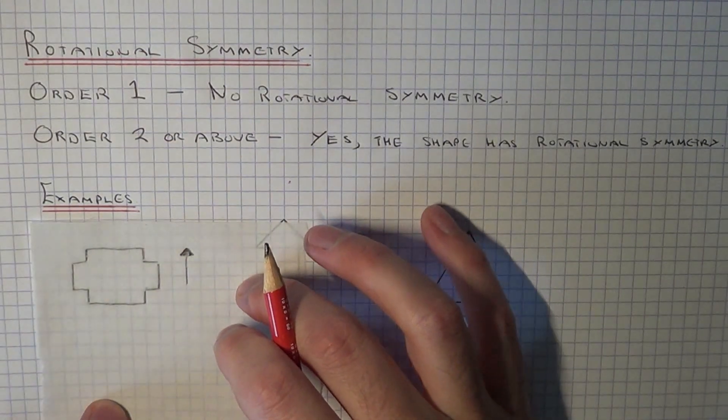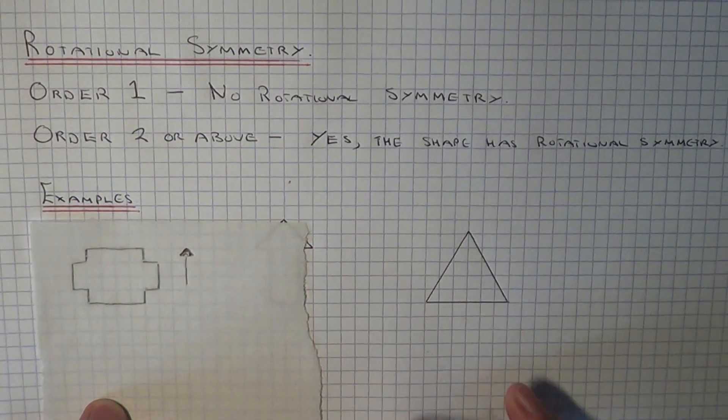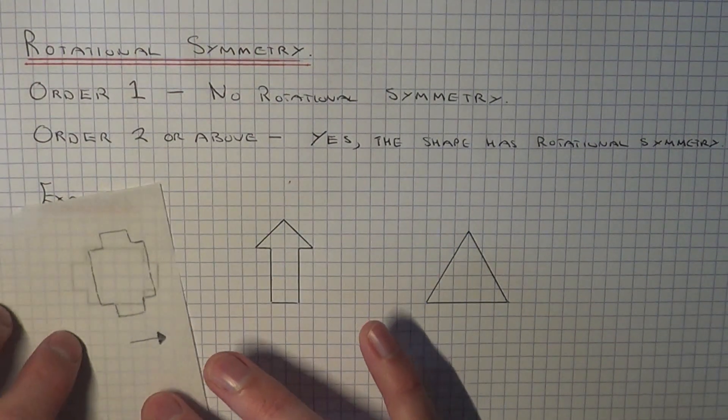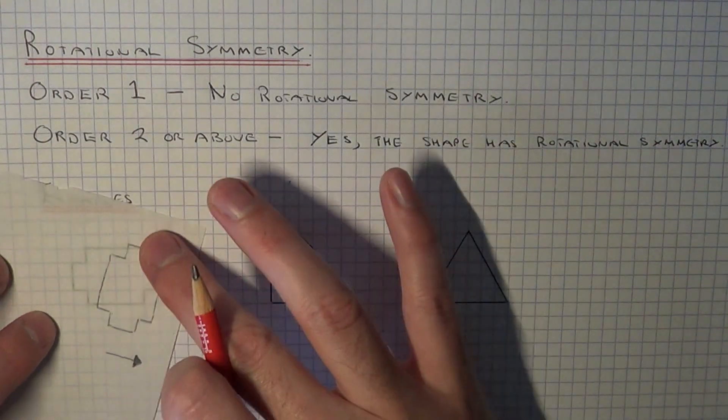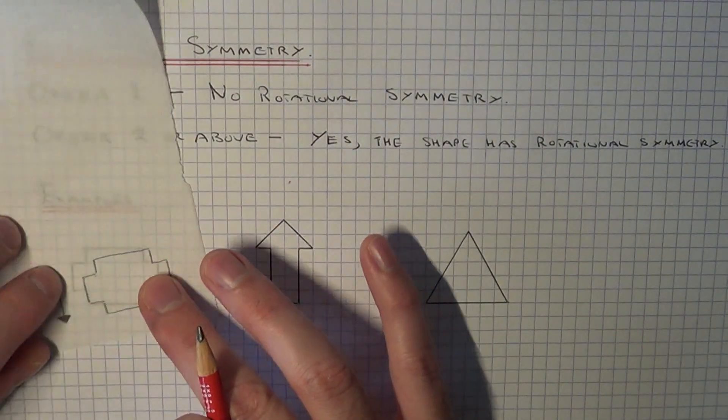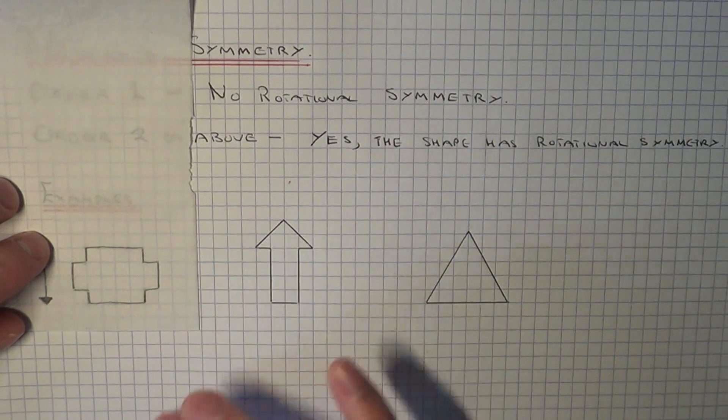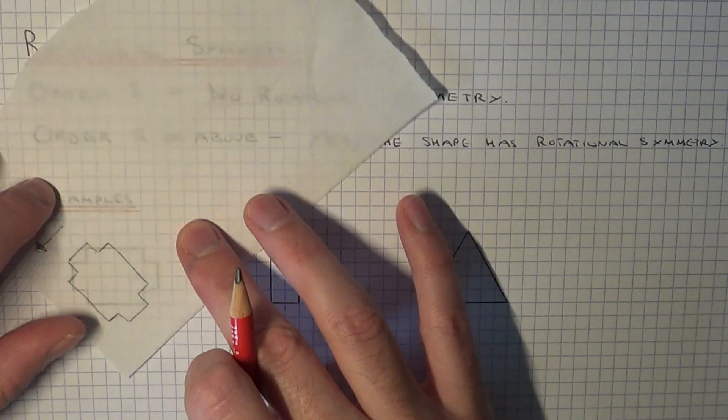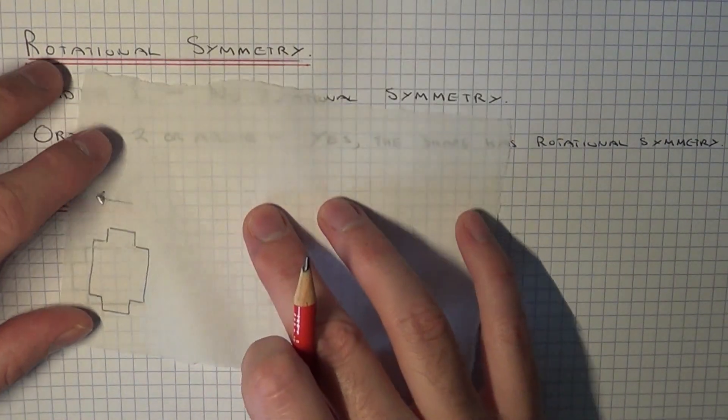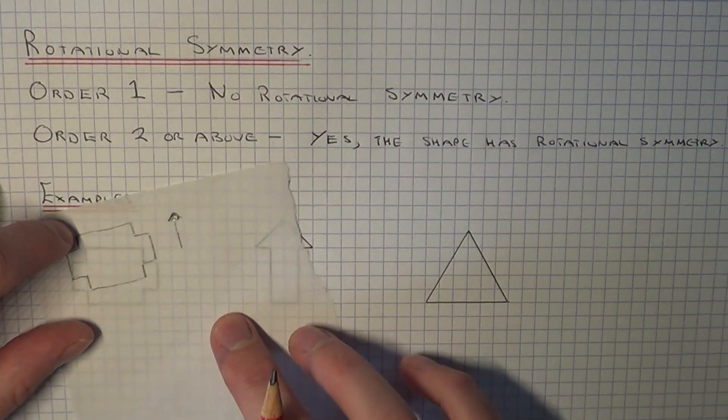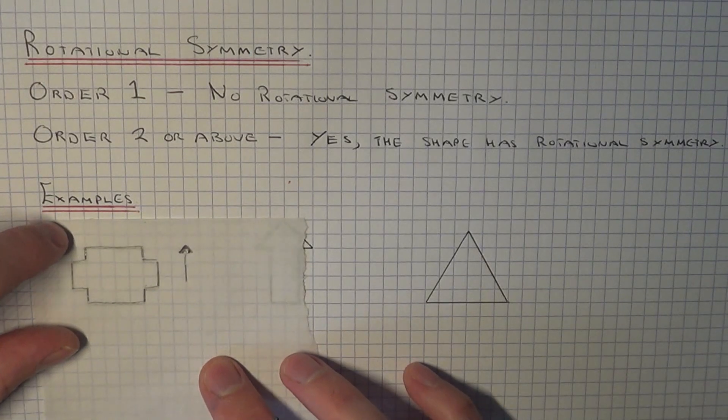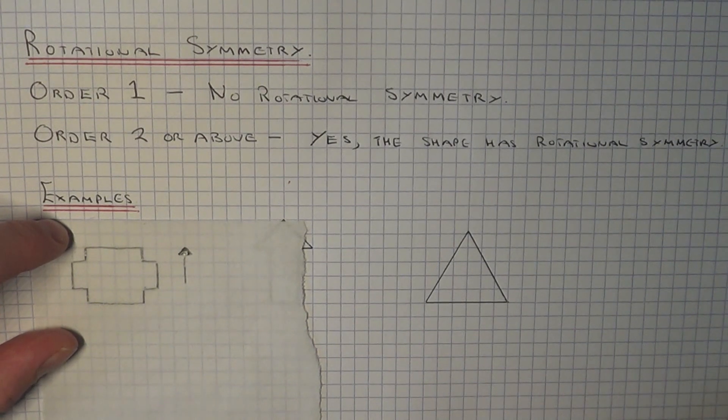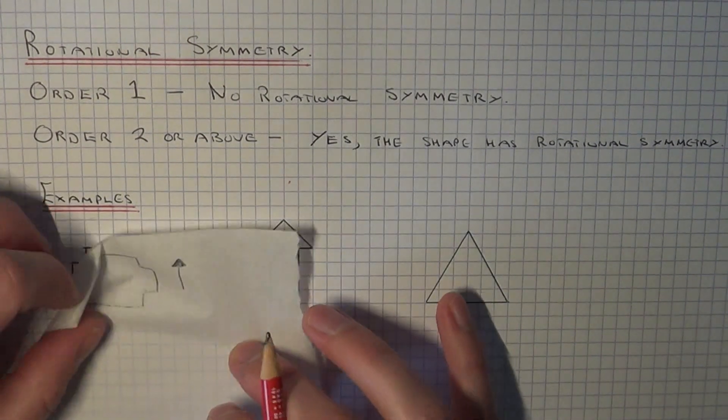Okay, so let's turn the shape around a full turn to see how many times we can fit it onto itself. Okay, so it's not fitting here. Okay, turn it around a bit more. There we go, so that's once. Let's keep turning it. Does it fit here? And then we're back at the start now. So that's twice. So we'll count the one at the end as well. So the order here then is two.